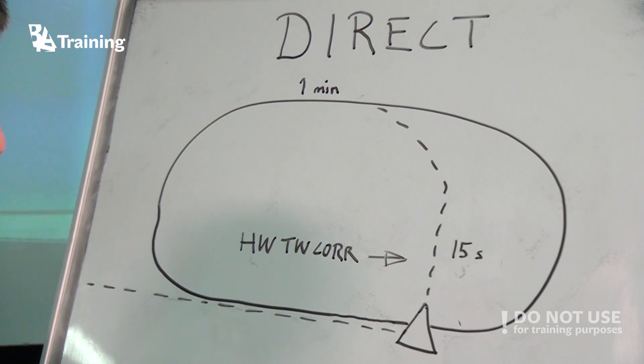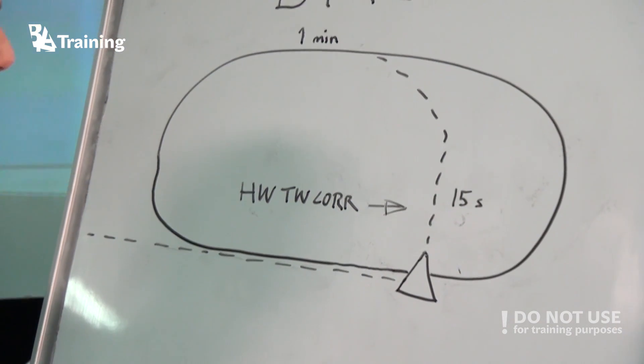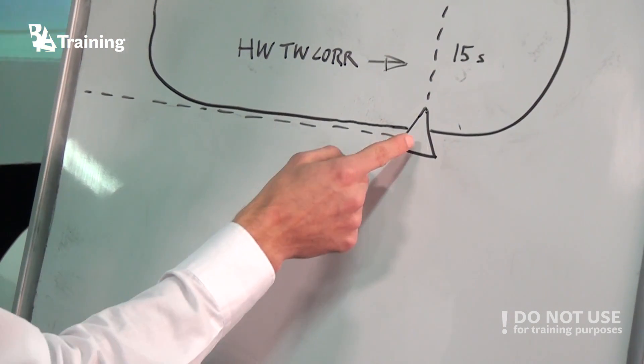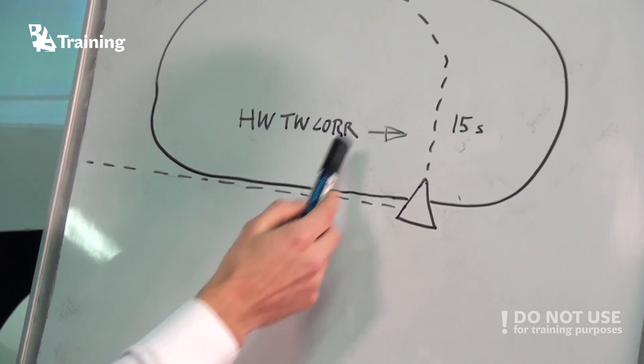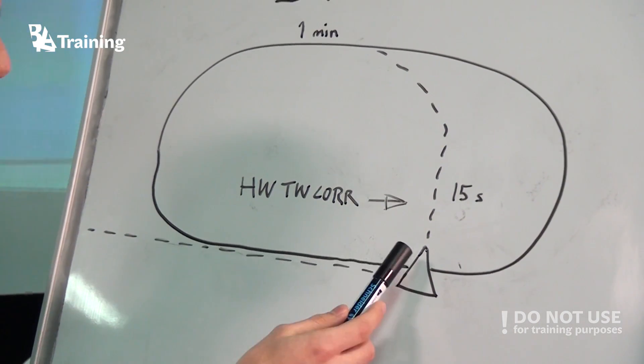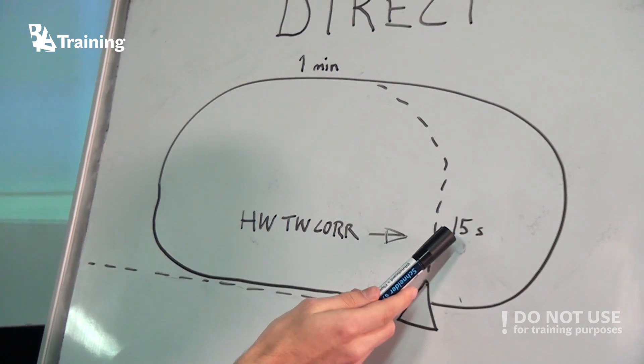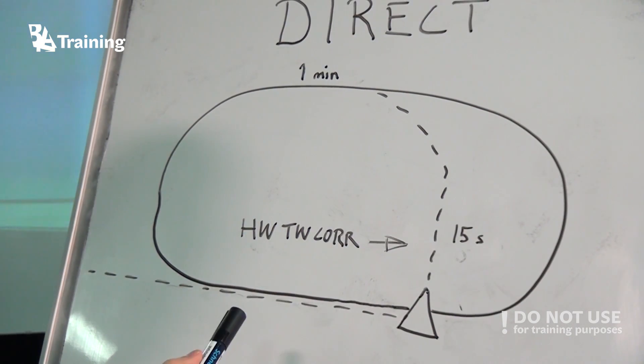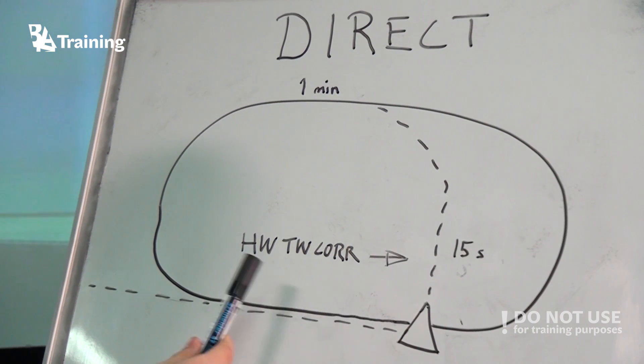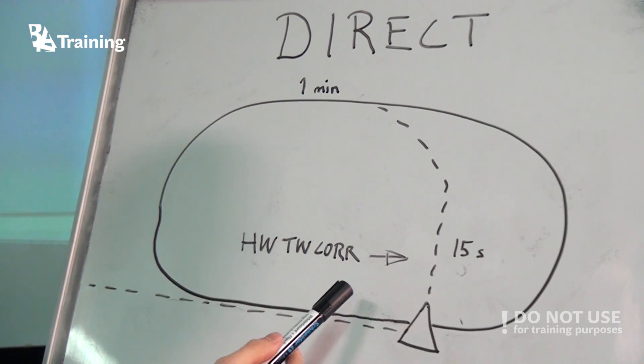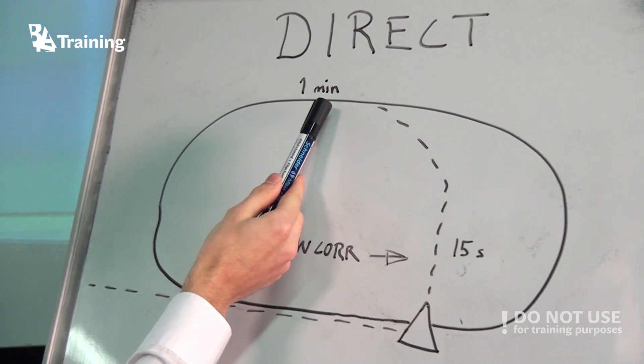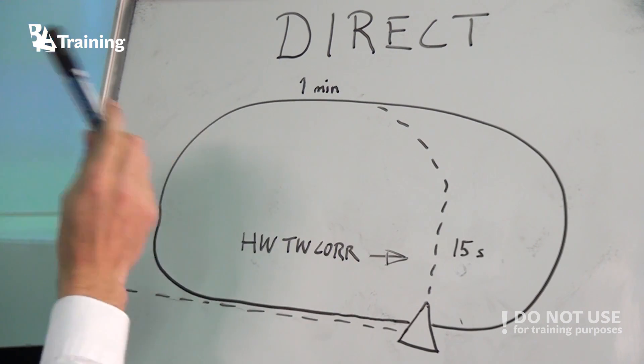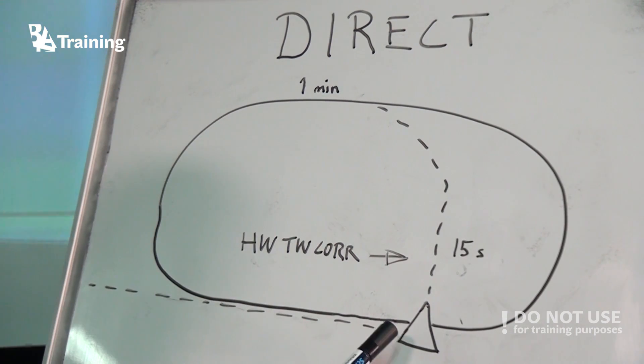But if you come from, in this case, south, you can proceed to the fix. Go 90 degrees against the inbound leg for 15 seconds if you have no wind. Otherwise, we have to make some headwind and tailwind correction. After 15 seconds, you can turn to the outbound leg and fly for one minute and fly back to the fix.